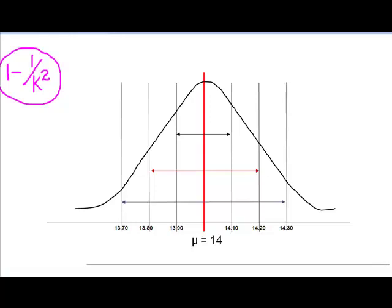So they want to know what percentage of the observations will be between 13.85 and 14.15. So, next job is to find out where the heck is that on our curve. Well, 14.15 is going to fall right there, isn't it? Halfway between 14.10 and 14.20. 13.85 is going to fall right here, halfway between 13.80 and 13.90.